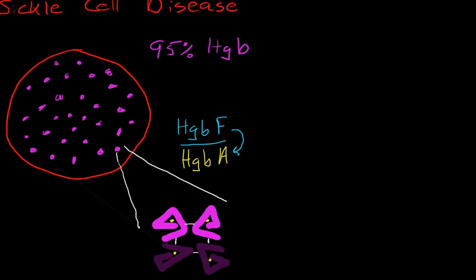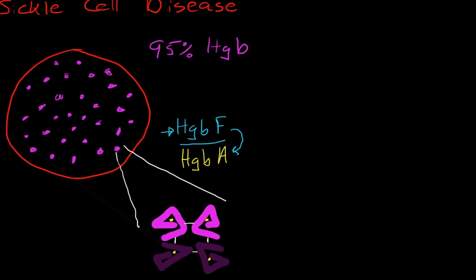Hemoglobin F becomes important when we talk about treatments for sickle cell disease, because one of the treatments actually involves increasing the concentration of hemoglobin F and replacing some of hemoglobin A with hemoglobin F using a medication called hydroxyurea. But I want to talk more about what hemoglobin A is.